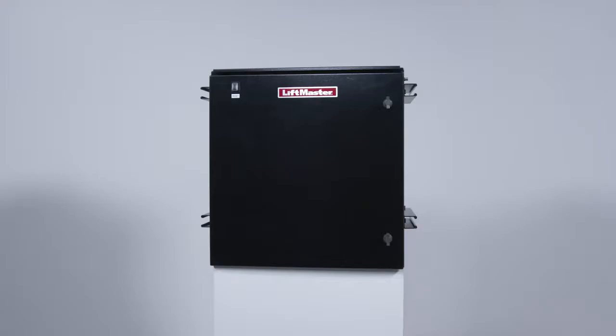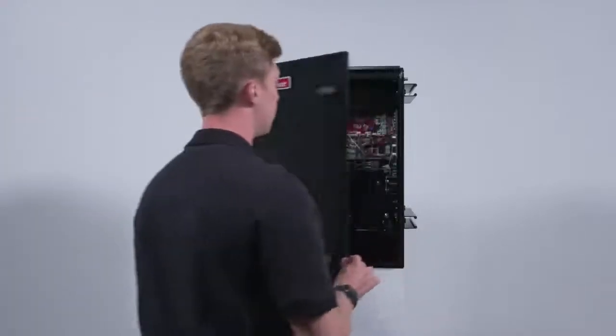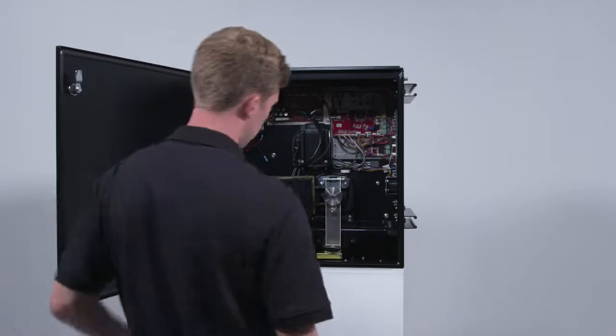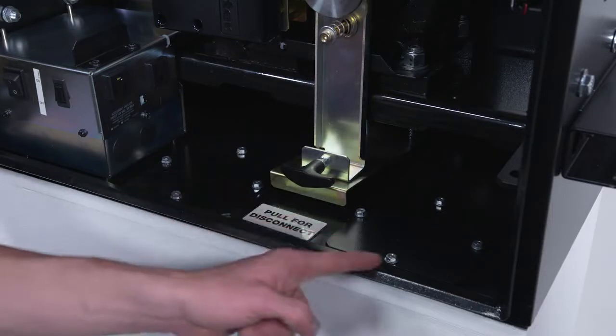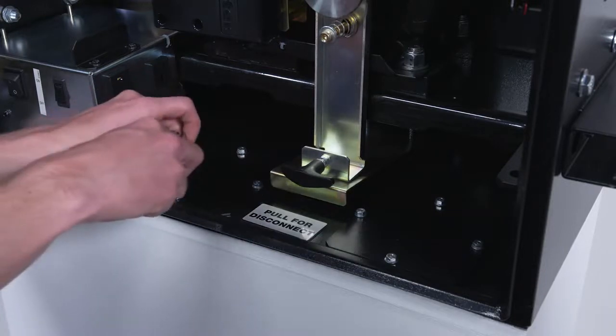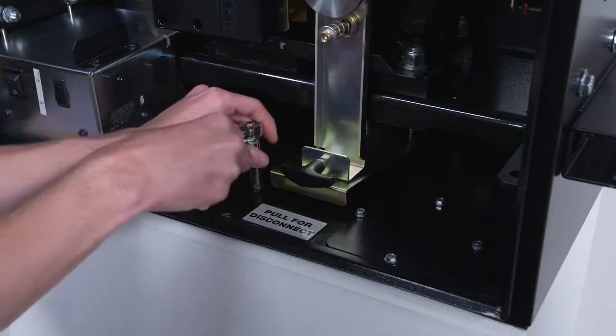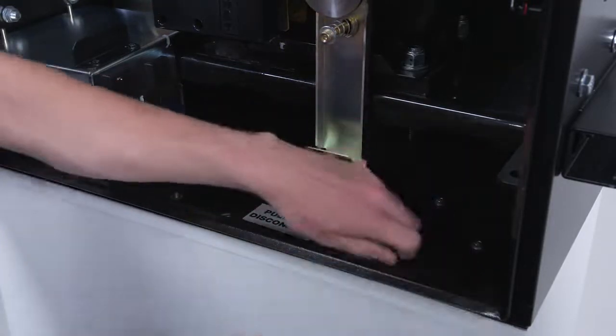First, we need to create access holes for the conduit for power and control wiring. Either at your shop or at the job site, open the operator. Locate the access plates. There are two. Either can be used to route power or control wiring into the operator. The power wiring must be run through a separate conduit from the control wiring. Remove the plates and drill a hole that is appropriately sized for the conduit of your site application.